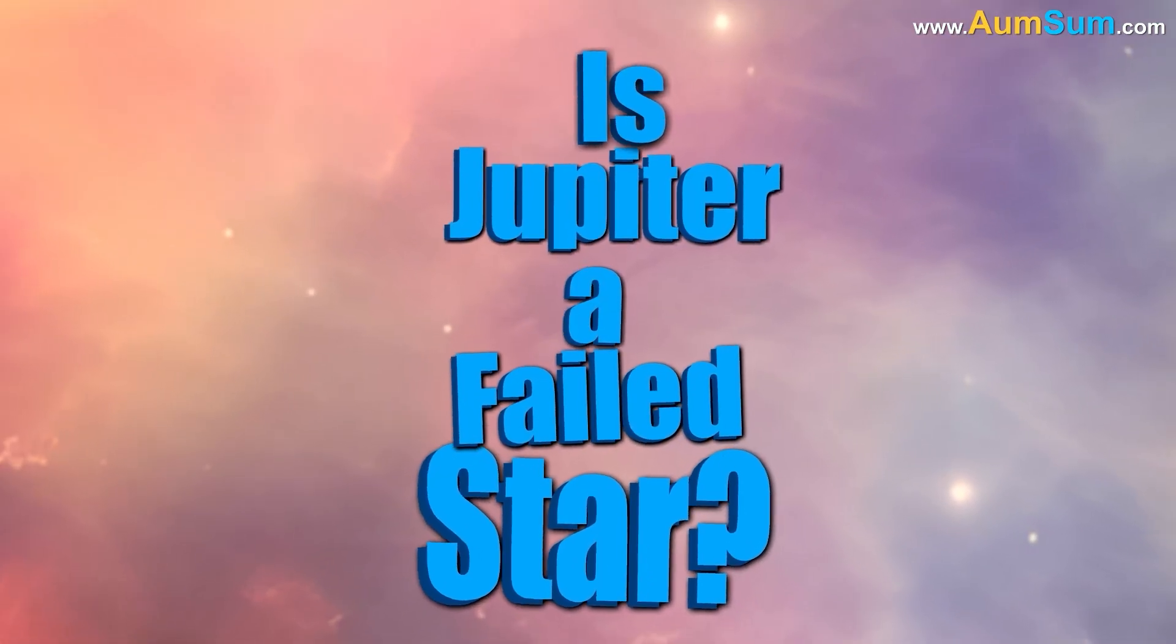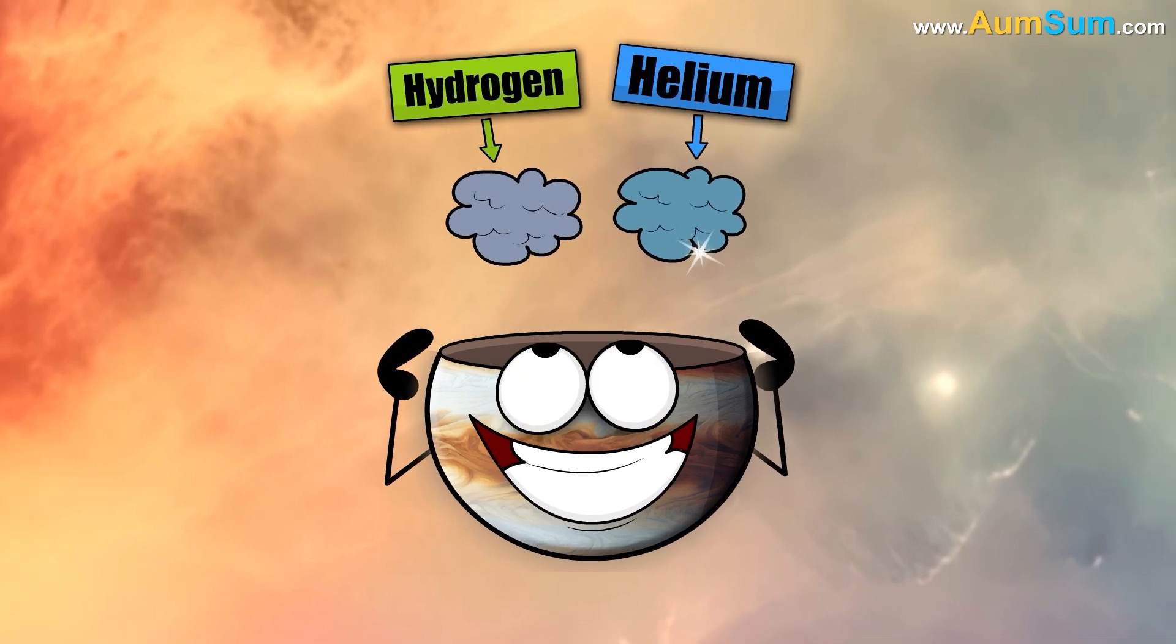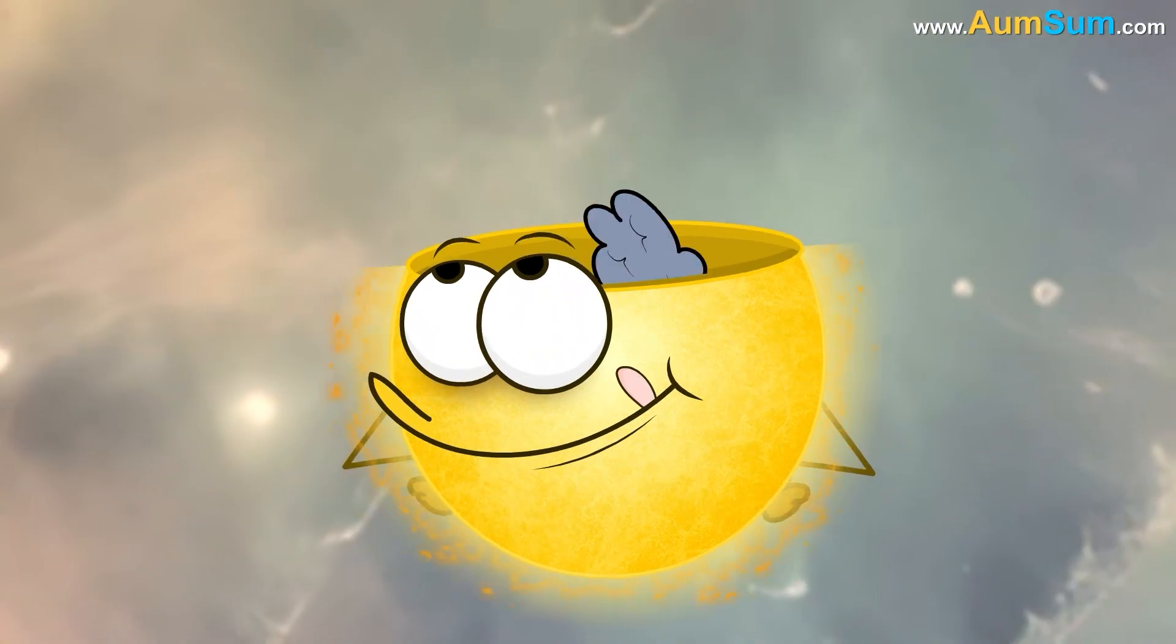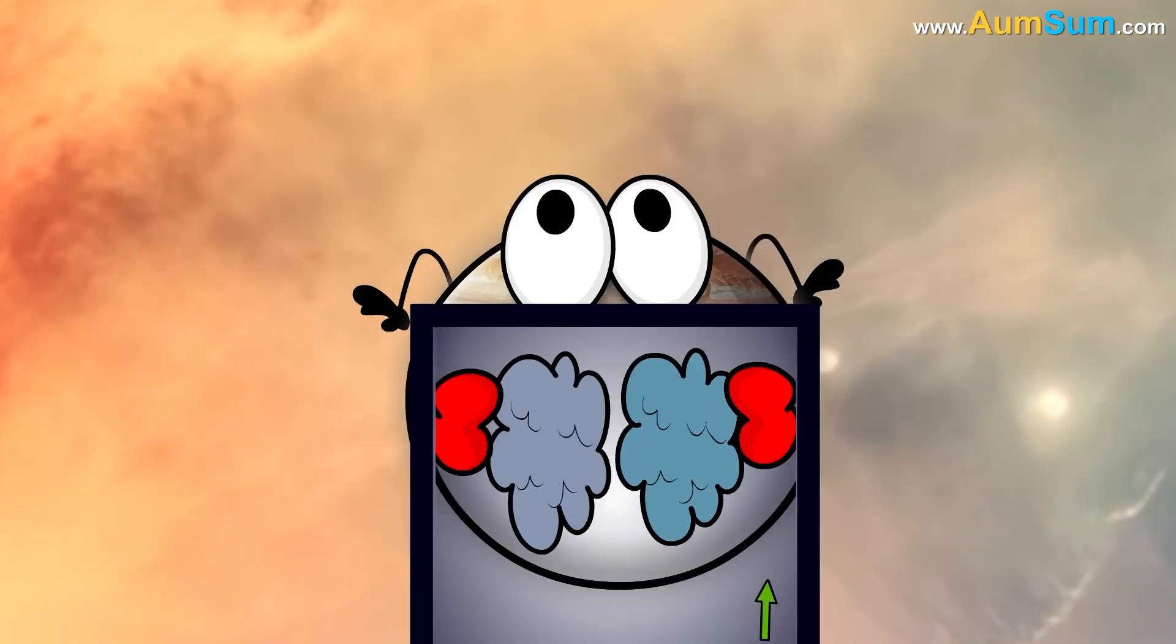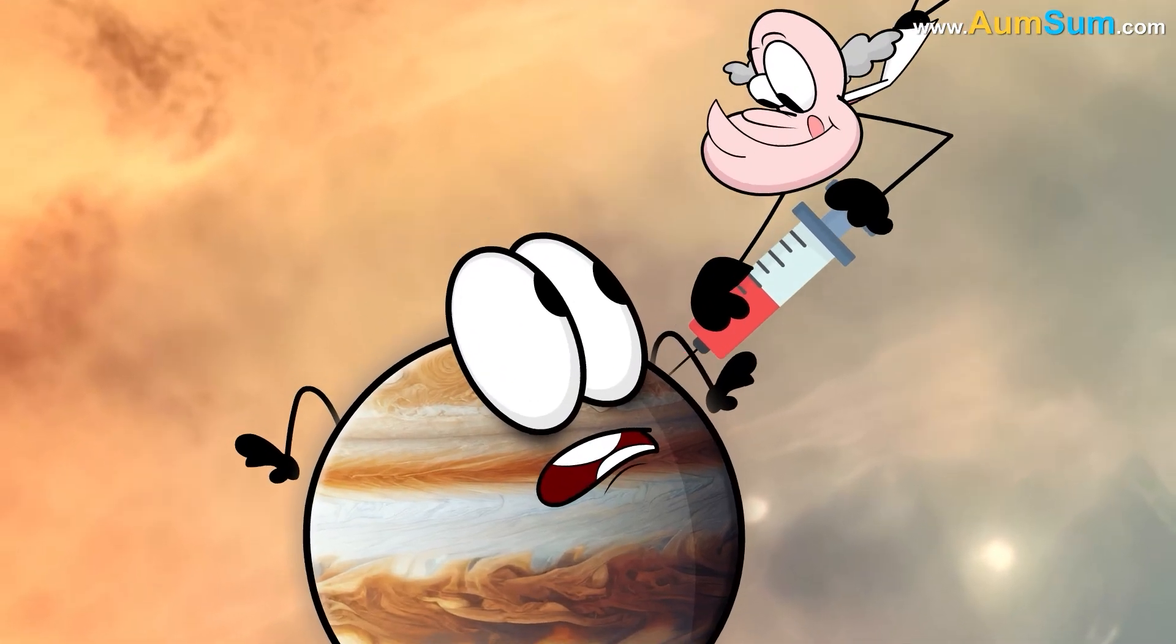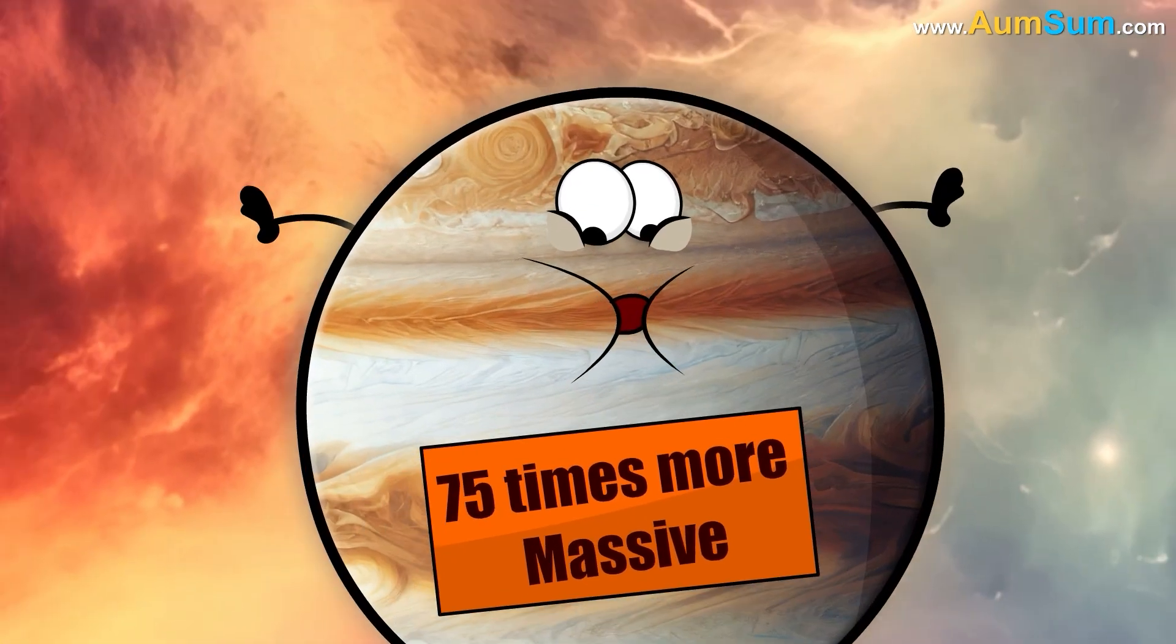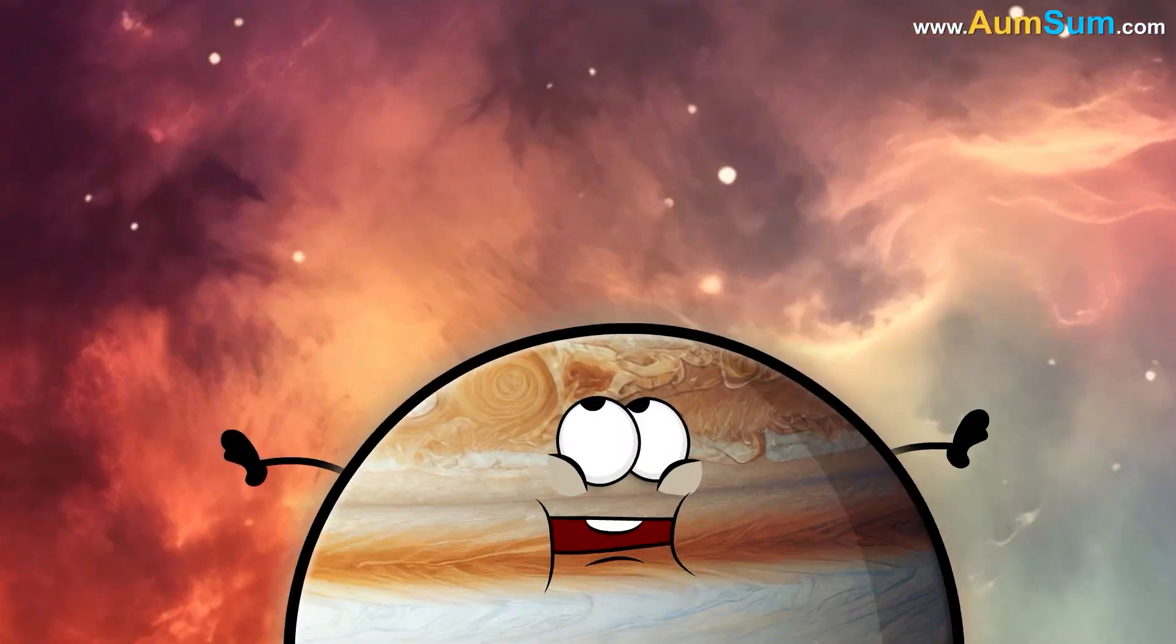Is Jupiter a failed star? To start with, Jupiter is made up of hydrogen and helium, the same elements as our Sun. But it is not massive enough to create the internal pressure and temperature needed to fuse hydrogen into helium. Basically, Jupiter would need to be about 75 times more massive to ignite nuclear fusion in its core.